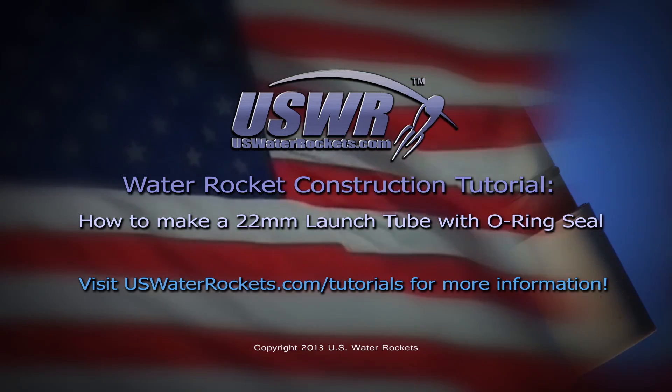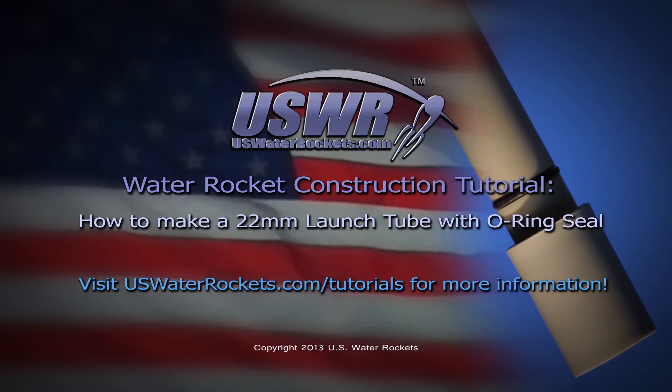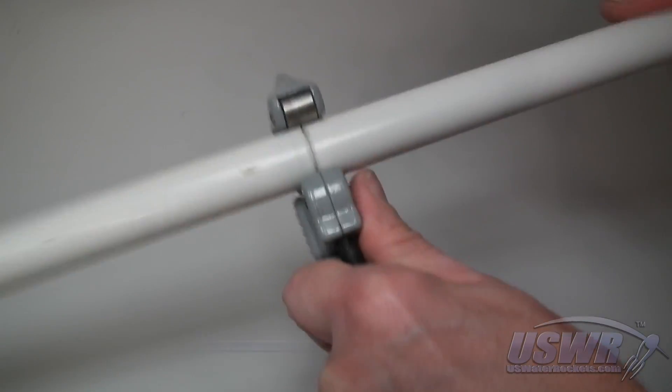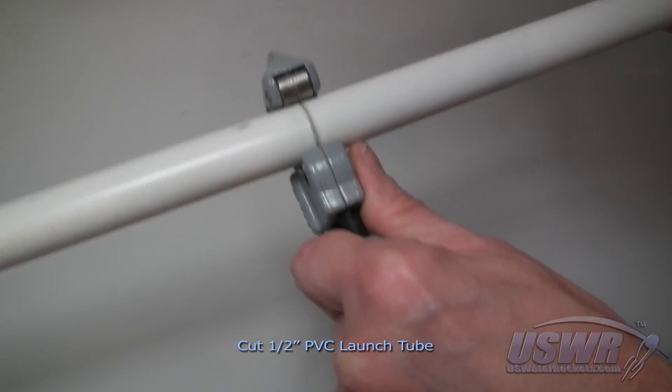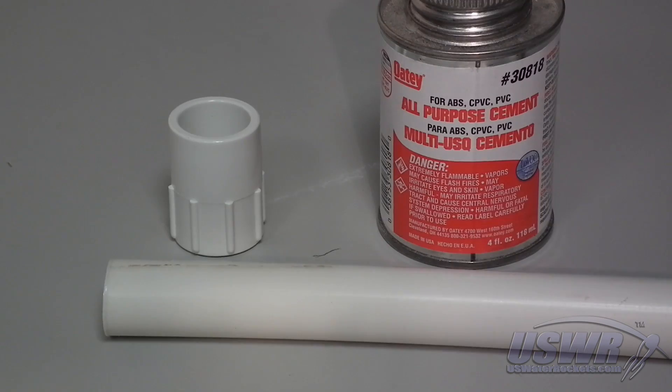US Water Rockets construction tutorial: how to make a 22 millimeter launch tube with an o-ring seal. Cut a piece of 1 1/2 inch PVC pipe to the length of your launch tube.